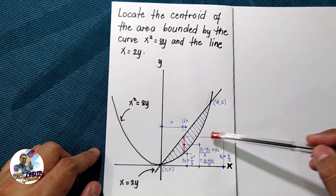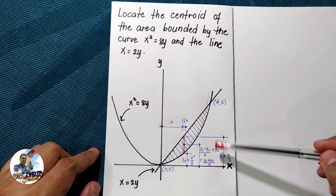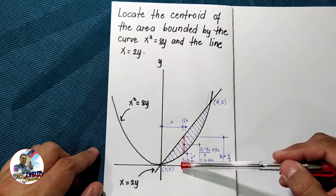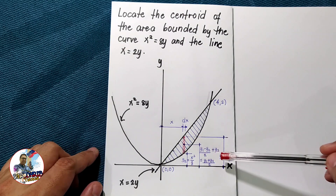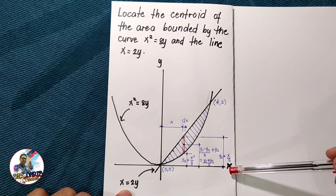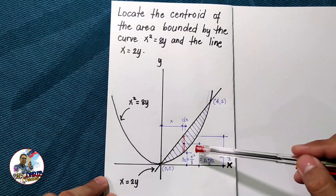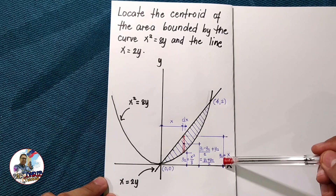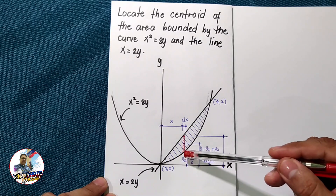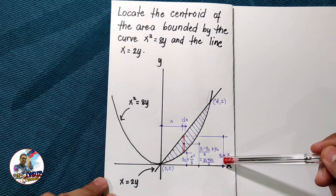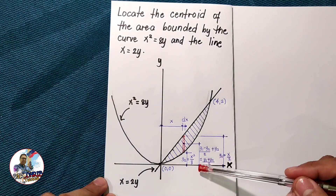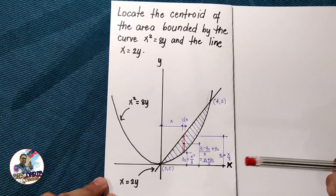The distance y₁ is the upper boundary located on the line x = 2y, so y₁ = x/2. The distance of the centroid of the differential area with respect to the x-axis is (y₁ − y₂)/2 + y₂, which simplifies to (y₁ + y₂)/2.